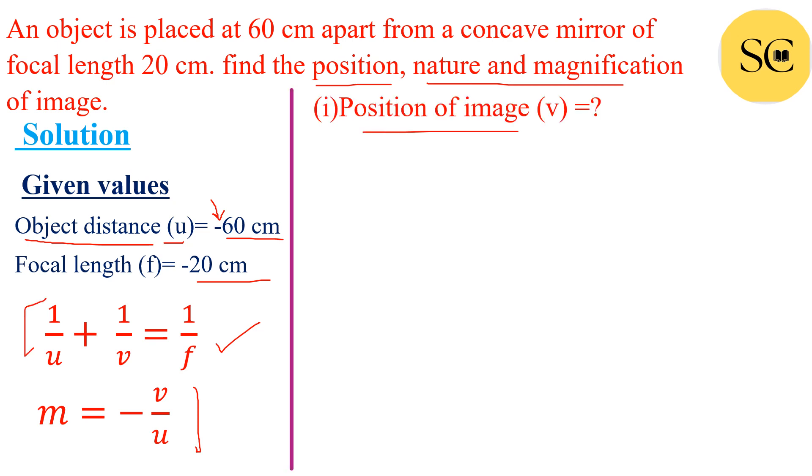Now first position of image means v, image distance. The formula is 1 upon u plus 1 upon v is equal to 1 upon f. Now we will have to find the value of v. Put the value, value of u is minus 60 plus 1 upon v and value of f is minus 20.